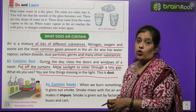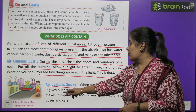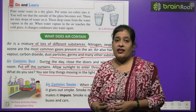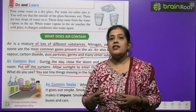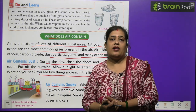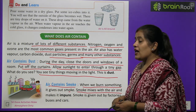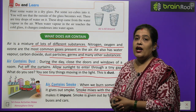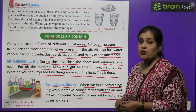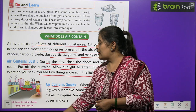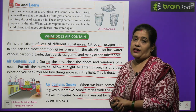Air contains smoke. When we burn something, it gives out smoke. Jab bhi hum koi cheez jalaate hain, toh usme se dhua nikalta hai. Smoke mixes with the air and makes it impure. Smoke is given out by factories, buses and cars. Jitne bhi vehicles hain, sab mein se dhua nikalta hai.